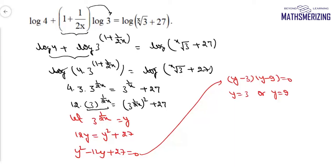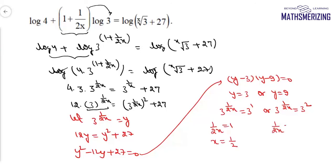Now I'll substitute back the value of y, where y equals 3 to the power 1 upon 2x. So either 3 to the power 1 upon 2x equals 3 to the power 1, or 3 to the power 1 upon 2x equals 3 to the power 2. Comparing powers: 1 upon 2x equals 1 gives x equals 1/2, or 1 upon 2x equals 2 gives x equals 1/4.